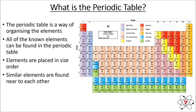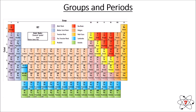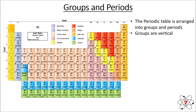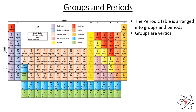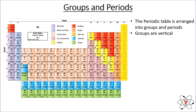The first thing we need to understand is what groups and periods are. Groups in the periodic table are vertical. Group one, also known as the alkali metals, includes hydrogen, lithium, sodium, potassium, rubidium, cesium, and francium. Group two is next, then group three starts with boron, followed by groups four, five, six, seven, and finally group eight, also called group zero — the names are used interchangeably, though group zero is slightly more correct.